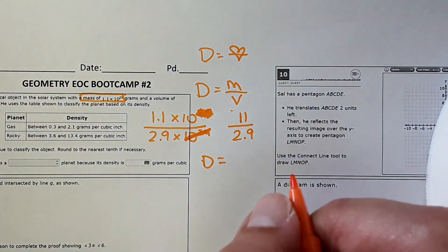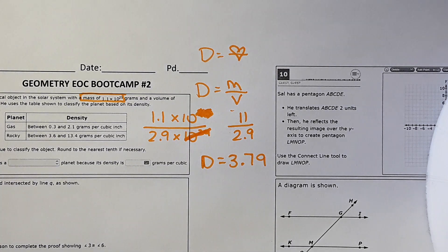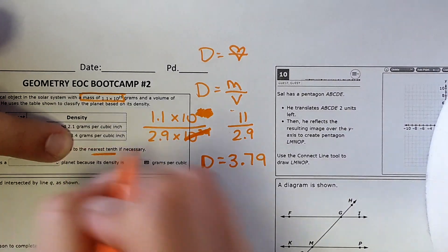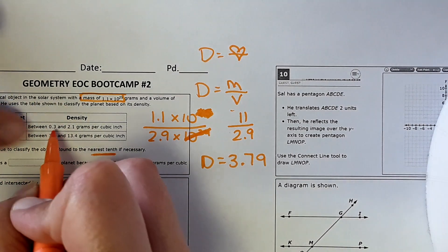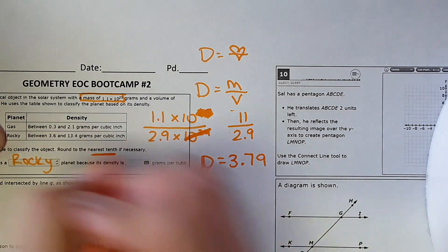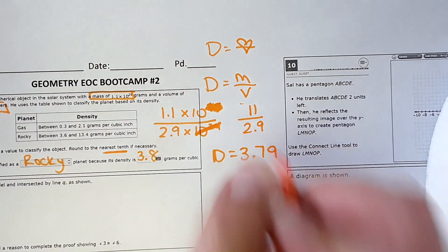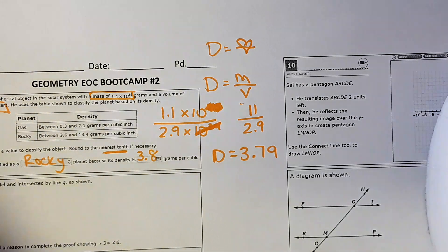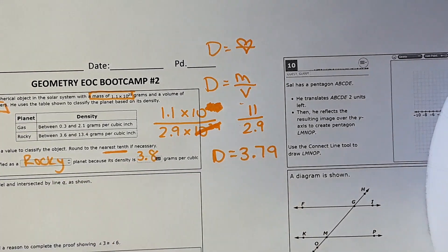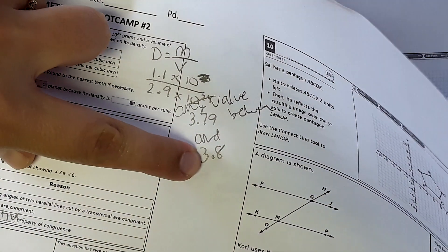1.1 times 10 you could do without a calculator, just move the decimal over. 11 over 2.9 divides to density equals 3.79. Now it says select a word and enter a value to classify the object, rounded to the nearest tenth. If it falls between 3.6 and 13.4, it's rocky. So it is a rocky planet, and its density rounded to the nearest tenth would be 3.8 grams per cubic inch. The answer key says 3.79 and 3.8 would be accepted, so anything between 3.79 and 3.8 would be accepted.